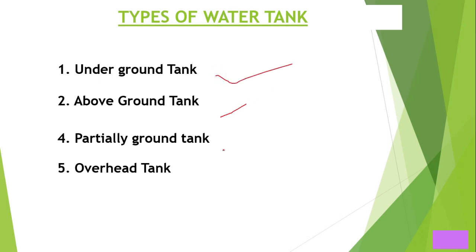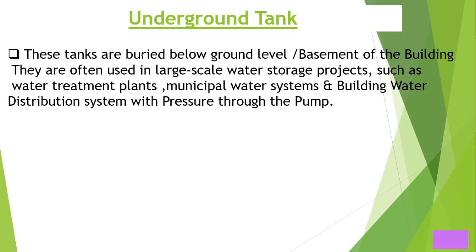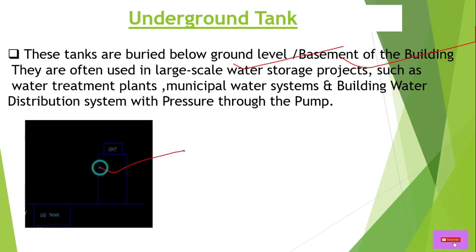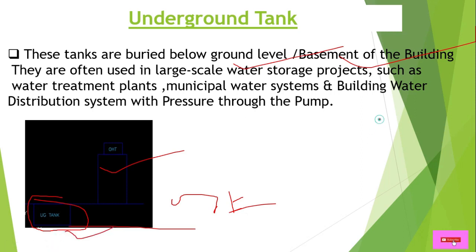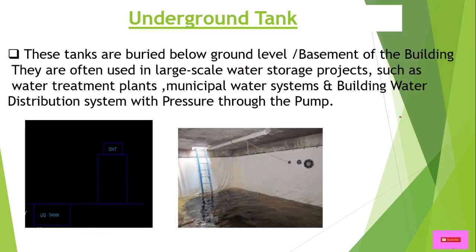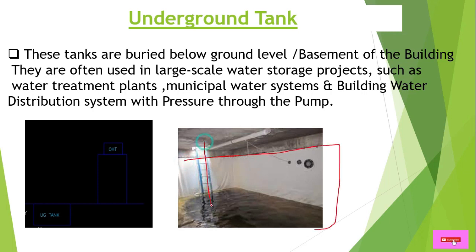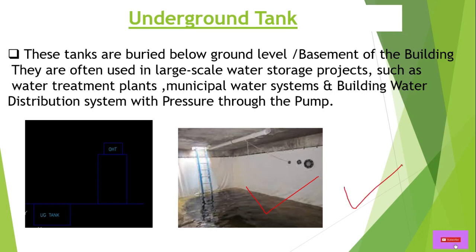Now let's discuss tank types one by one. Underground tanks are buried below ground, typically in the basement of the building. For hotels and other buildings, tanks are usually in Basement 2 or Basement 1. The underground tank has a riser, an overflow line, a water filling line, and a drain at the bottom.